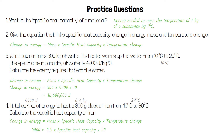If we rearrange this, specific heat capacity is equal to 4,000 divided by 0.3 times 29, which gives us a specific heat capacity of 459.8 joules per kilogram per degree Celsius.